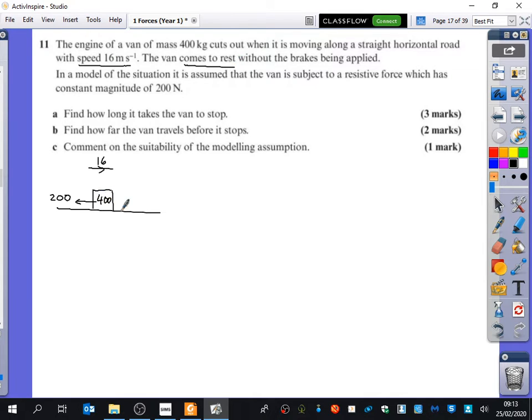Now the mass of this is 400. And if we think it's moving in this direction, what would the resultant force be if we were resolving to the right? Minus 200. We've got nothing going to the right, so we've got minus 200 equals the mass times the acceleration. So we were resolving it to the right using F equals ma. So when you divide by 400, you get that the acceleration is minus 0.5. Why is the acceleration negative?